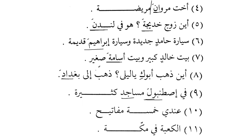Masajidu is on the pattern of Mafa'ilu. I have five keys - Mafateehu - because Mafatih is also on the pattern of Mafa'ilu. Nouns that come on the pattern of Mafa'ilu, like Masajidu and Mafateehu, are Mamnoo min as-Sarf. Al-Ka'batu fi Makkah-ta - the Ka'ba is in Makkah. Makkah is a city name, so it is also Mamnoo min as-Sarf. Fi hadha shari'i thalathu Masajidu - there are three mosques in this street.